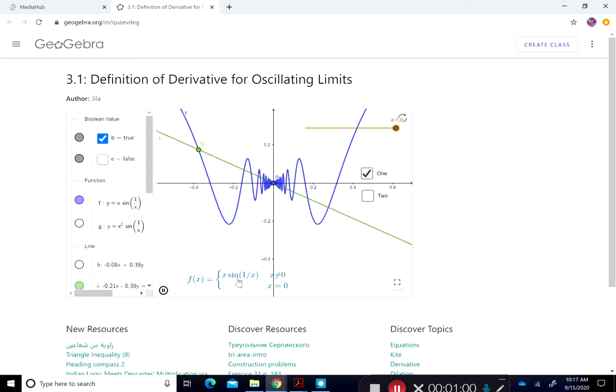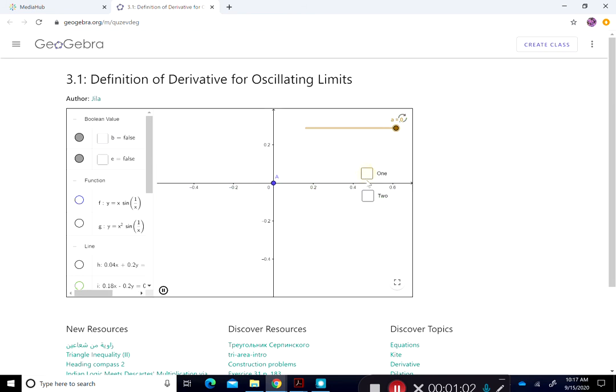But are all the oscillating functions like that? And it turns out the answer is no. Look at this one. If it's x squared sine of 1 over x, then you see that it oscillates, but the oscillation is kind of damped. And so when the secant line, when the two points of the secant line, the other point approaches zero, you see that actually the oscillation kind of dampens.